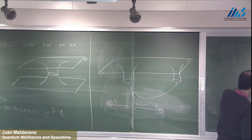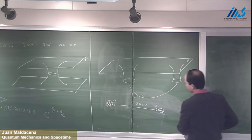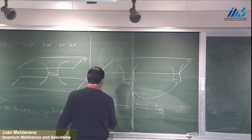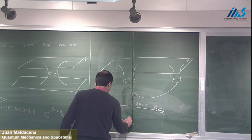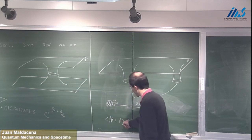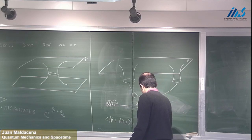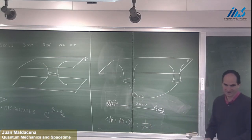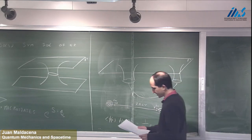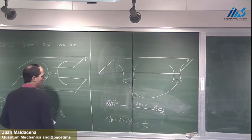If you calculate the correlation between a scalar field at point A near one black hole and point B near the other at t equals zero, you find correlations characteristic of a massless scalar field in four dimensions separated by two meters — the inverse square of two meters. These are the correlations we expect for two field points separated by two meters.